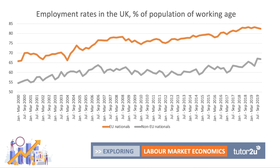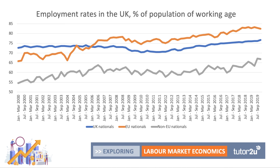One way of looking at migration is to ask: what percentage of the working-age population are in work? What's interesting is that, looking at EU nationals and non-EU nationals — people coming from countries such as India, Pakistan, the United States and so on — if you put in the blue line for UK nationals, what comes out in the data is that since the mid-2000s the employment rate, the percentage of the working-age population in work, has actually been higher for EU nationals in the UK than for UK nationals as a whole.